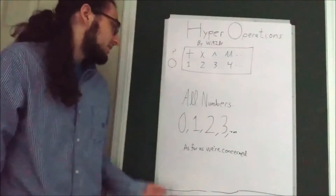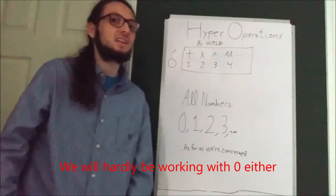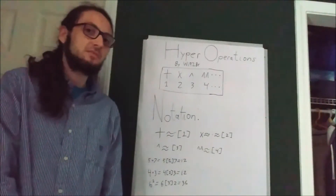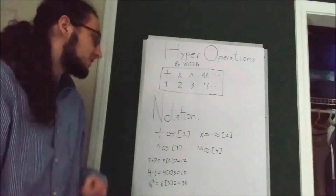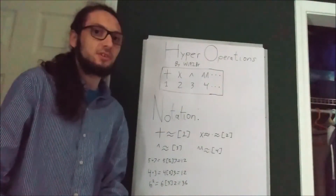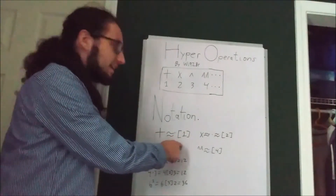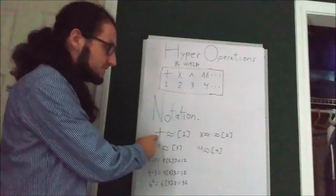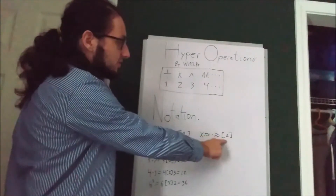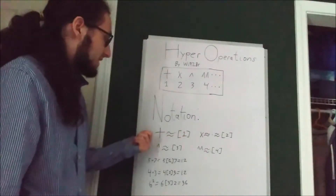Before we get too far into this, I would like to note that we are only going to be looking at how these operations interact with numbers 0, 1, 2, 3, and so on — the non-negative integers. We're not going to be looking at any negative numbers or complex numbers for this video. Now I want to make clear some notation I will be using. Because we'll be working with operations higher up in the series that we don't generally have symbols or well-known names for, it's good to have a notation that shows where they are in the series. So we will be using this square bracket and number notation. Plus is the first operation in our series, so it will be denoted by square brackets with a 1 inside. Similarly, multiplication will be shown with square brackets with a 2 inside, and so on.